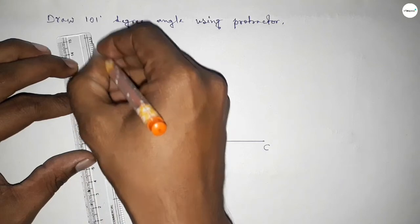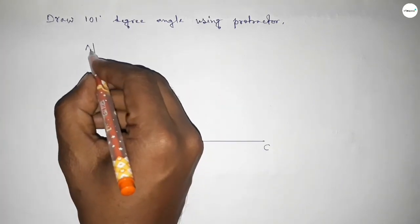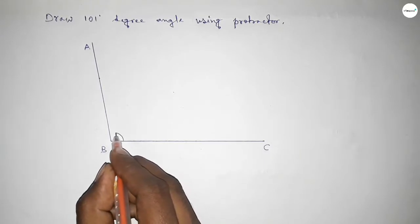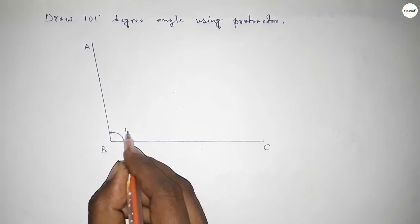Now taking here point A. So angle ABC, this is a 101-degree angle.